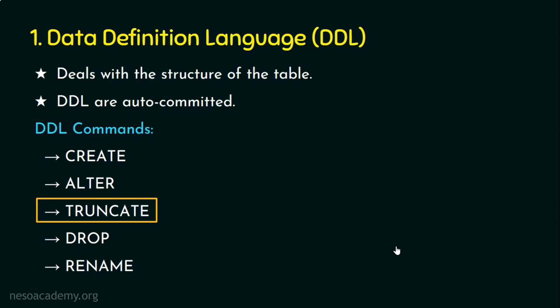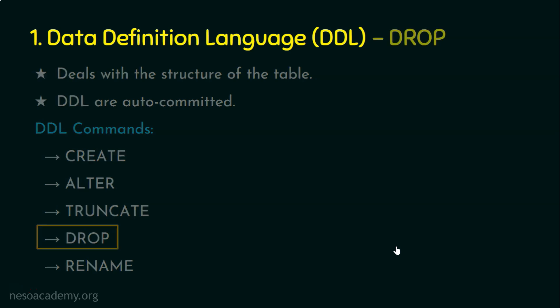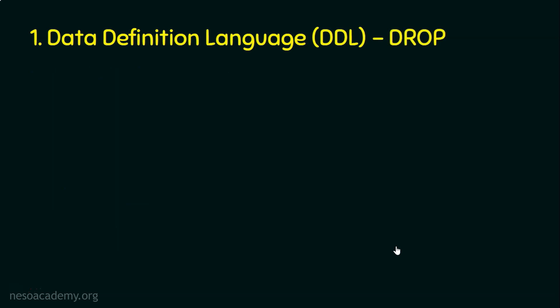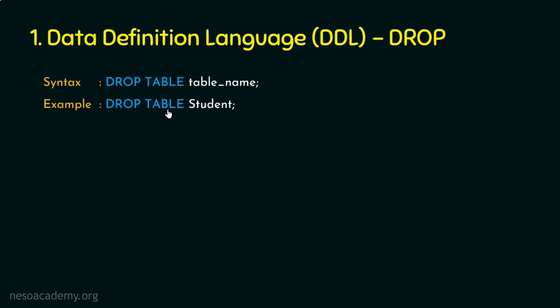Now let's see the DROP DDL command. In TRUNCATE, all rows were deleted but the structure remained. DROP is different. The syntax is: DROP TABLE table_name. For example: DROP TABLE student. This is similar in form to TRUNCATE TABLE student, but the behavior is very different.